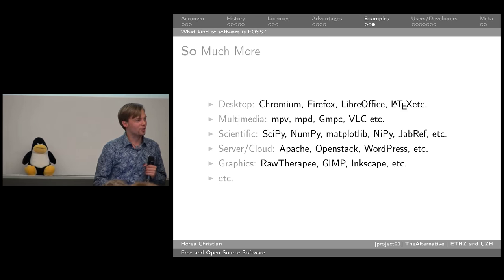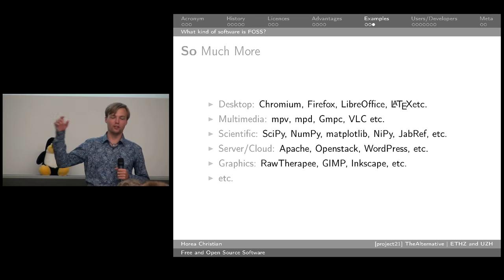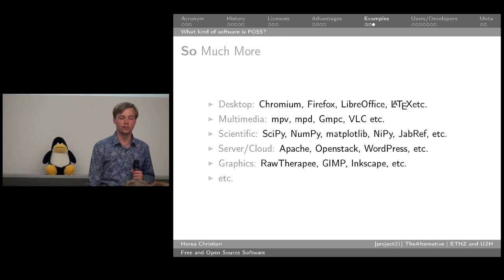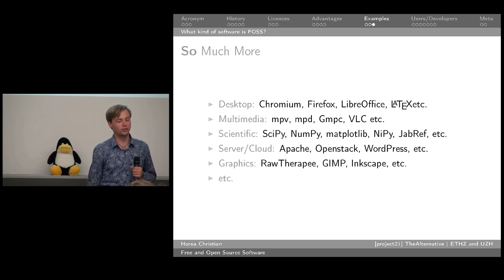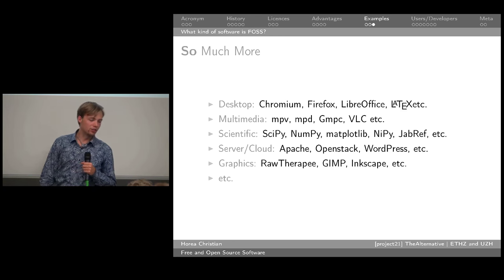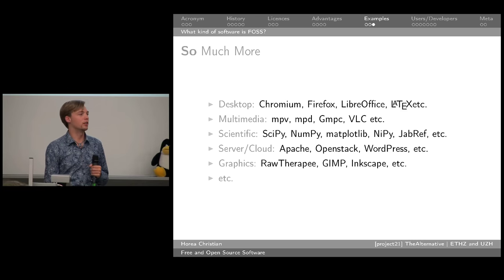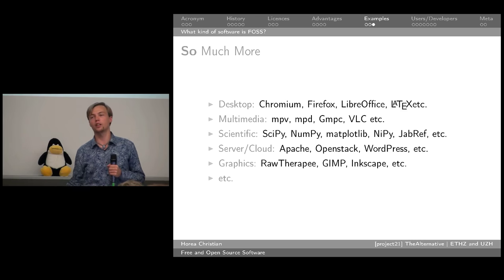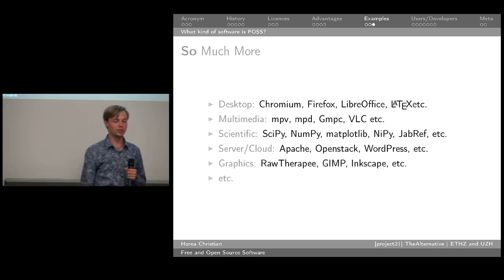Another area where free and open source software excels is the server and cloud area. Most of the servers you use run on open source software. Apache is the most-used server software. OpenStack — with a capital S — is software for managing virtual cluster servers. The University of Zurich uses it to manage its computing cluster and the Science Cloud. WordPress — some of you might have had blogs which use WordPress.